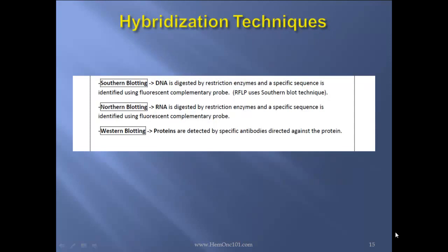Hybridization techniques — there are three you need to know. One is Southern blotting, in which the DNA is digested by restriction enzymes and a specific sequence is identified using fluorescent complementary probes. RFLPs, for instance, use Southern blot technique. Next is Northern blotting, in which RNA is digested by restriction enzymes and a specific sequence is identified using fluorescent complementary probes. And then Western blotting, in which proteins are detected by a specific antibody directed against the protein.